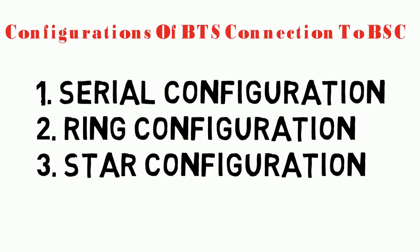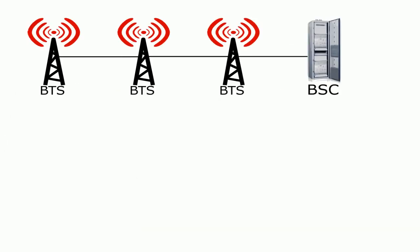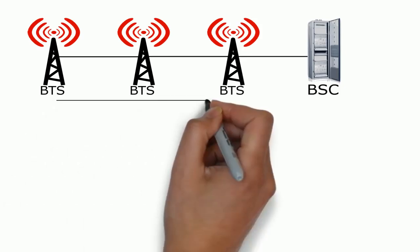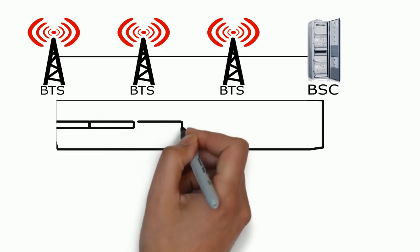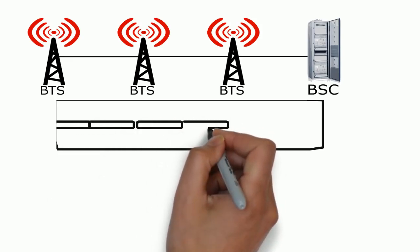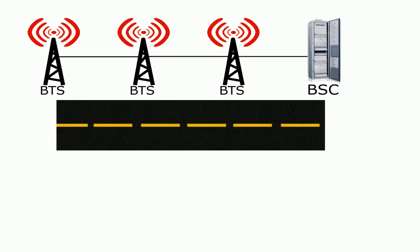First of all, we are going to discuss the serial configuration. In this serial configuration, as is evident from the diagram, the BSC, the BTS, and the other BTSs connected to the BSC are all connected in serial. This configuration is most frequently used, for example, on highways when there is a large distance between two cities and you are going from one city to another.